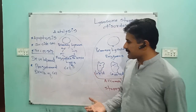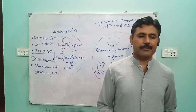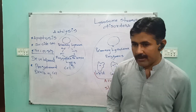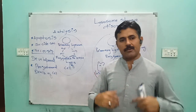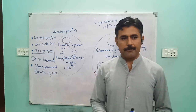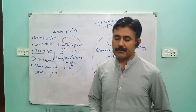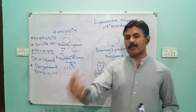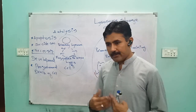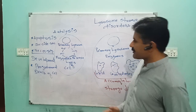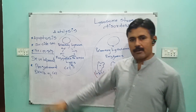In apoptosis, certain genes are activated to destroy specific kinds of cells. These genes produce different mechanisms and stimulate enzymes, which ensure the death of particular cells that are no longer required by the body. In order to carry out apoptosis, lysosomes perform this function.